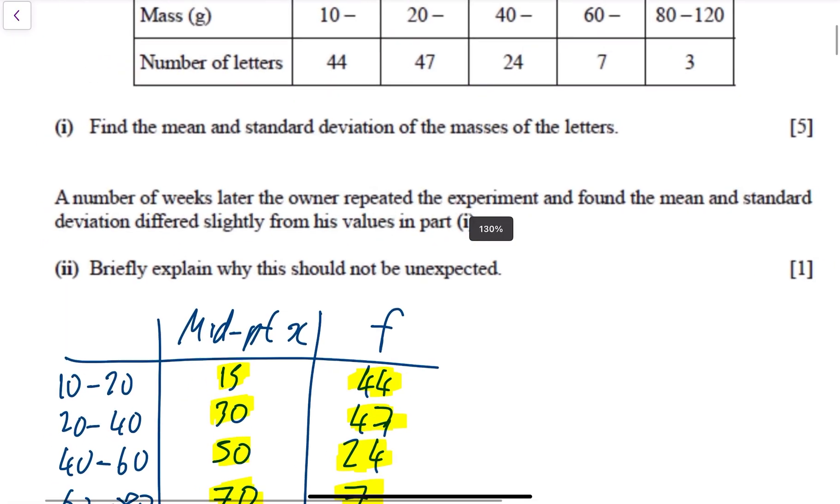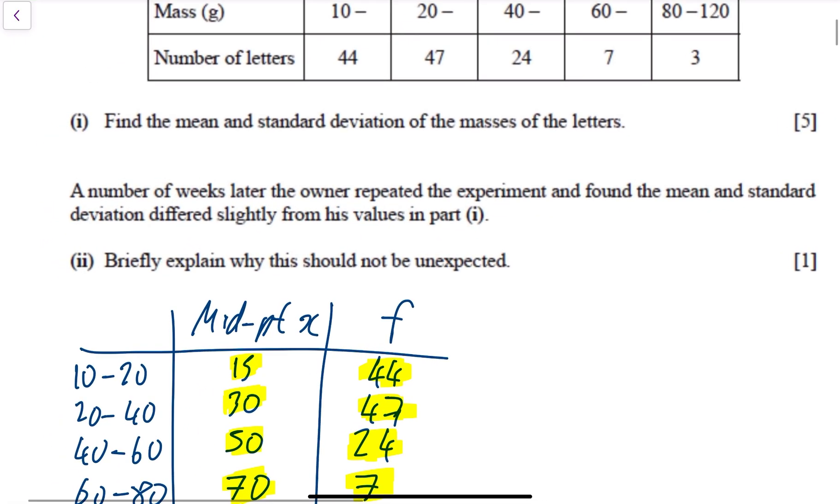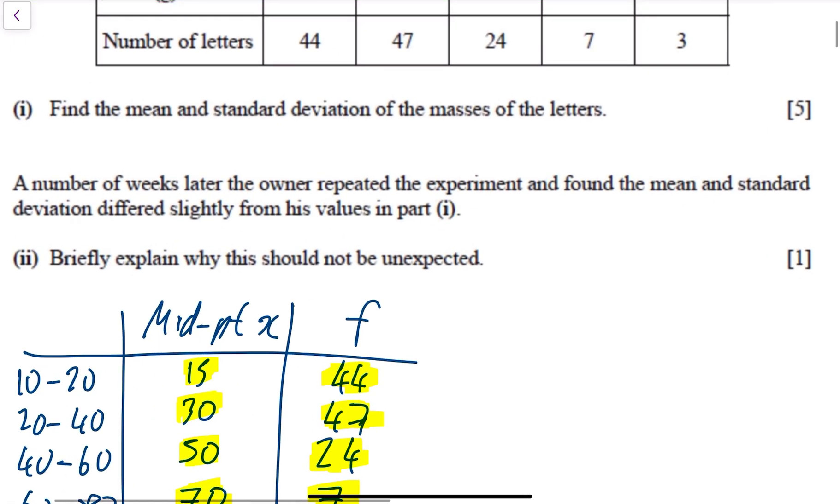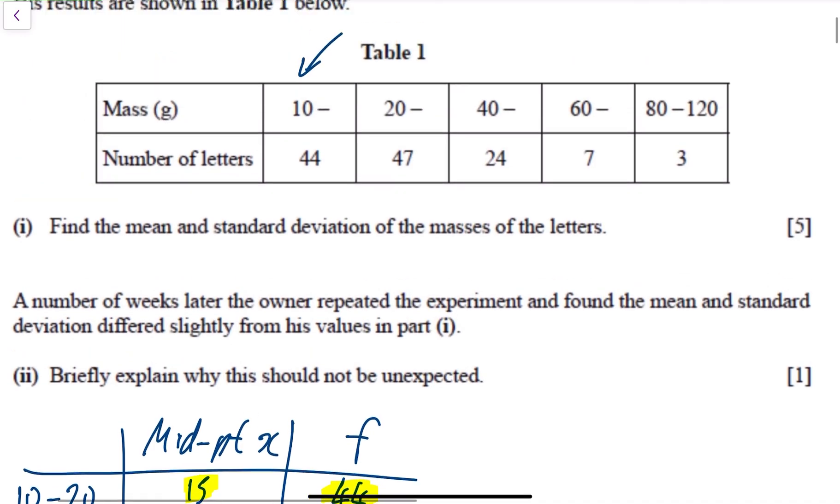Now the last part of the question—there's normally another one-marker bit. It says a number of weeks later the owner repeated the experiment and found the mean and standard deviation differed slightly from the values in part i. Explain briefly why this should not be unexpected.